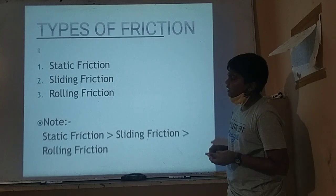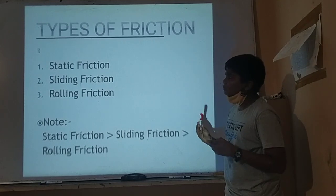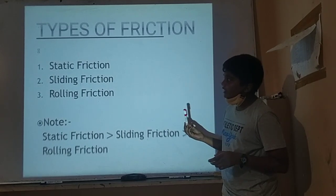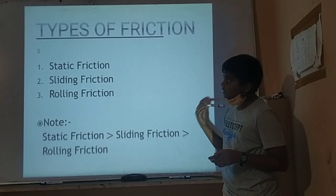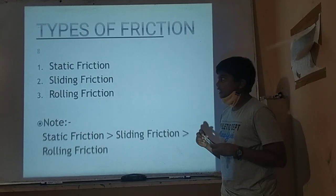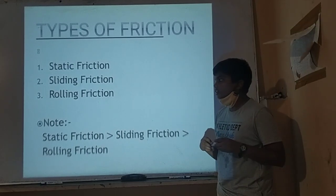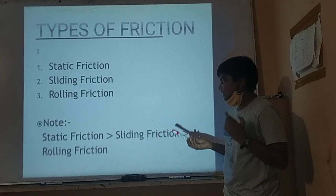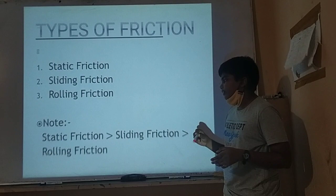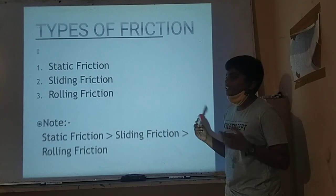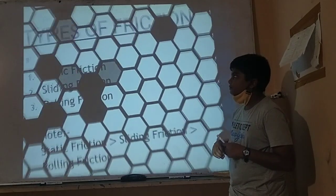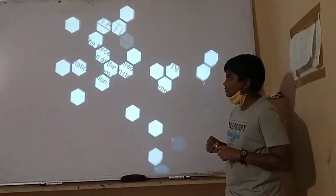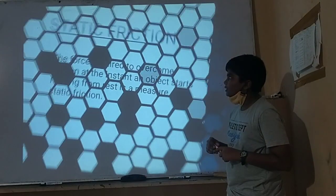Types of friction. There are three types of friction. First is static friction, second is sliding friction, and third is rolling friction. Static friction is greater than sliding friction, which is greater than rolling friction.